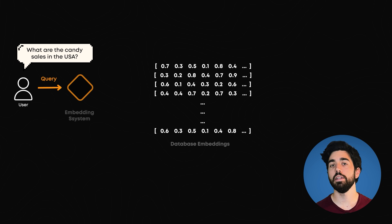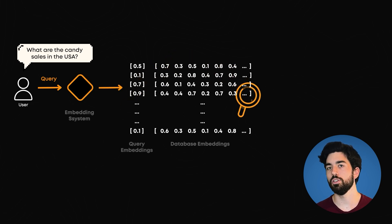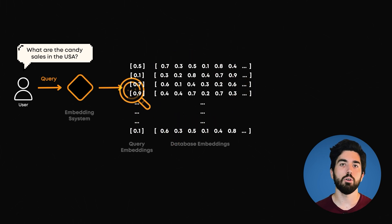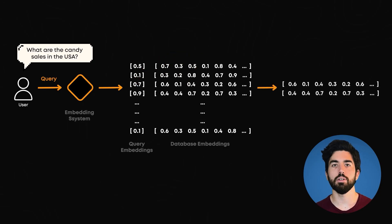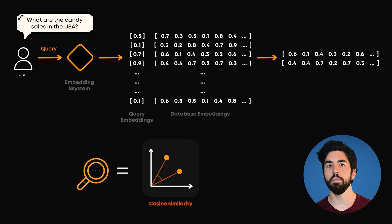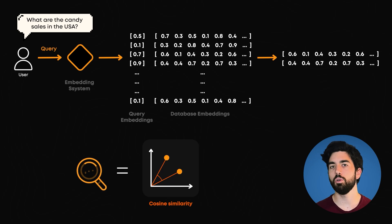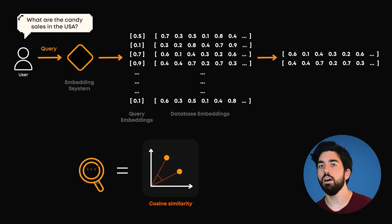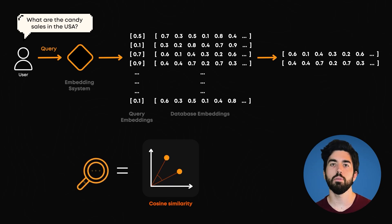The search process involves computing the similarity between the query embedding, which is our user question, or the term we want to search, and our document embeddings, which would be our dataset that we transformed into this embedding format. It typically calculates this similarity using a metric called cosine similarity. It compares each value of our query embedding vector with the other of an embedding vector from the database. It then repeats this for all embeddings that we have in the data to find the most relevant matches.